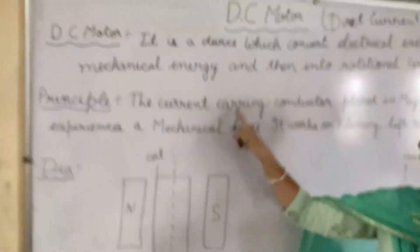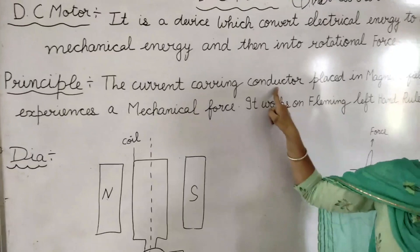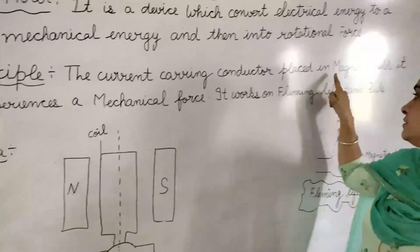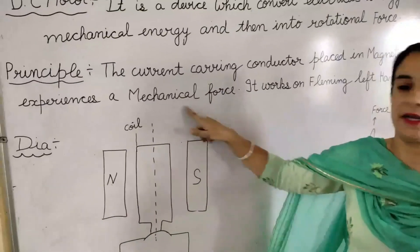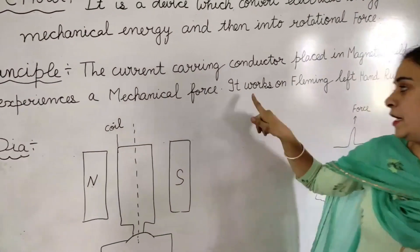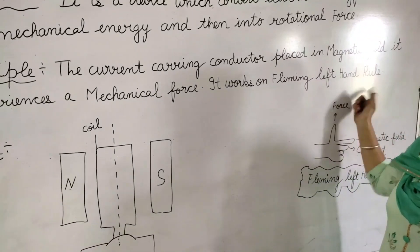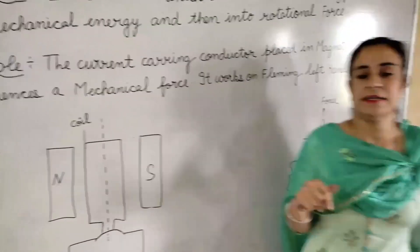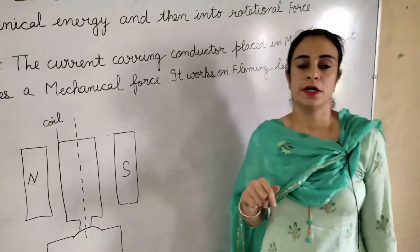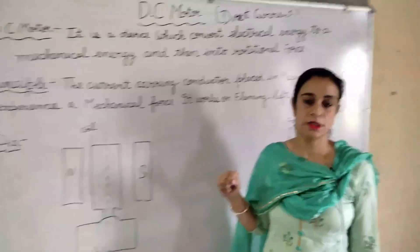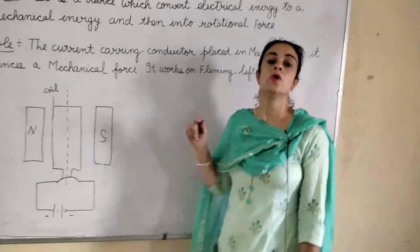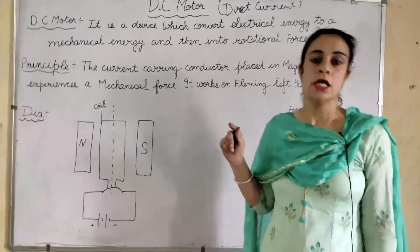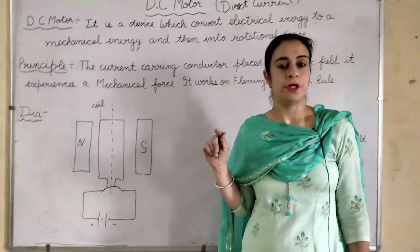We have a principle. The principle is that a current-carrying conductor placed in a magnetic field experiences a mechanical force. It works on Fleming's Left-Hand Rule. When a current-carrying conductor is placed in a magnetic field, a force is produced.